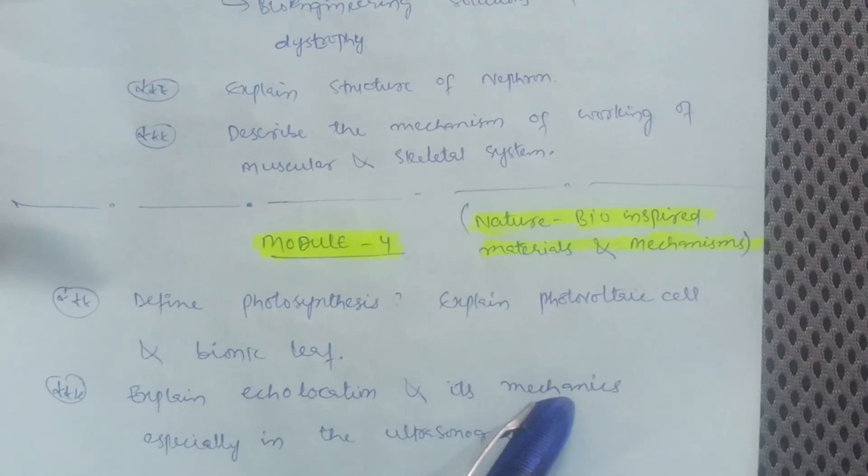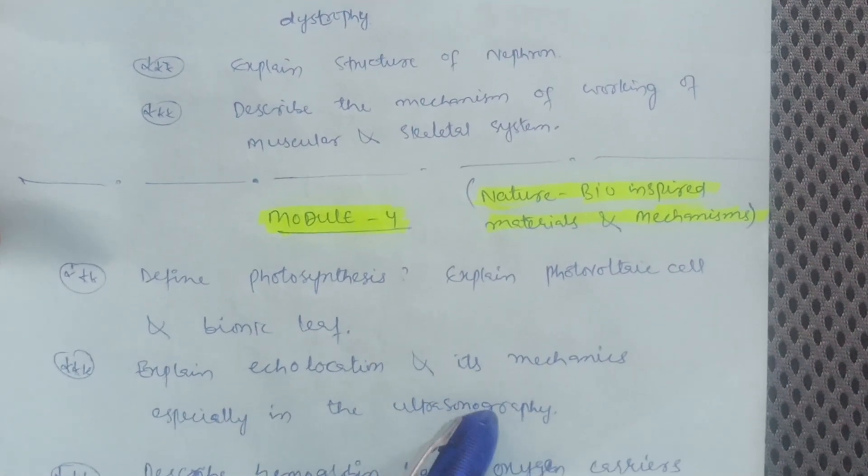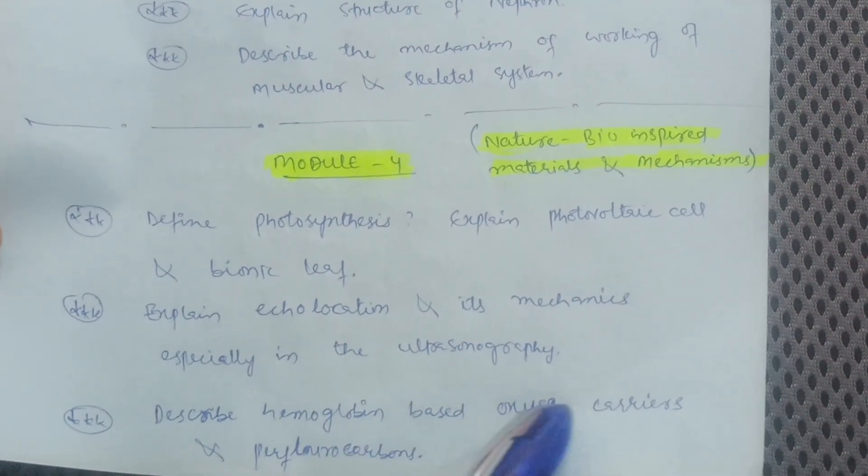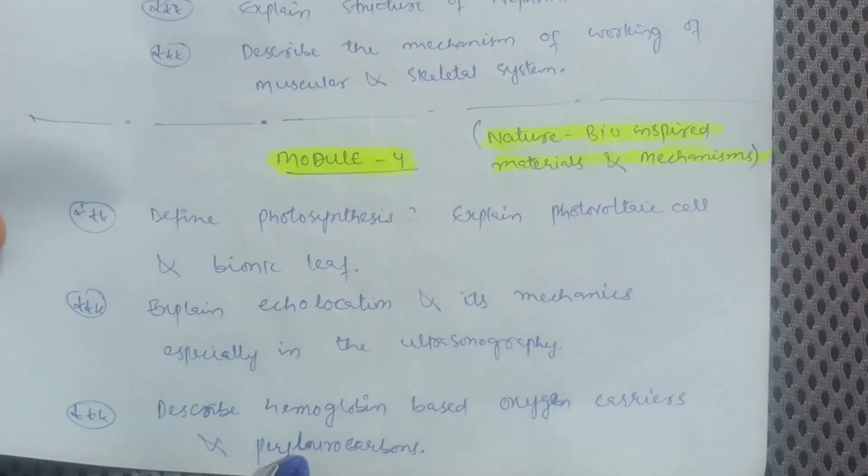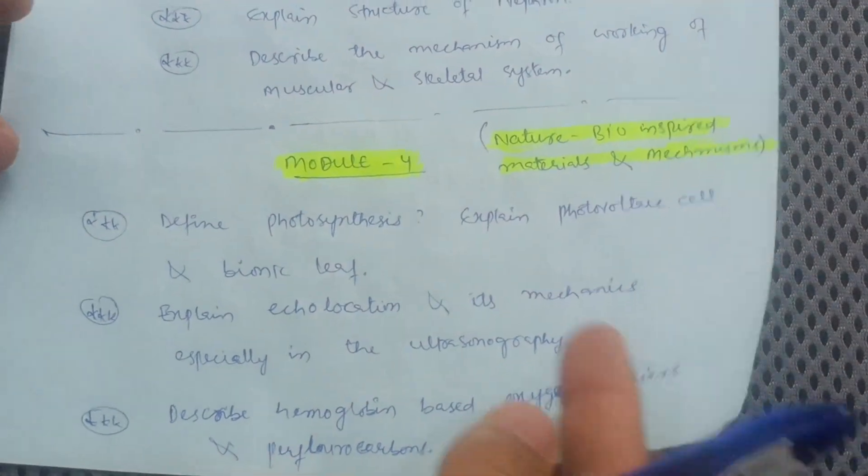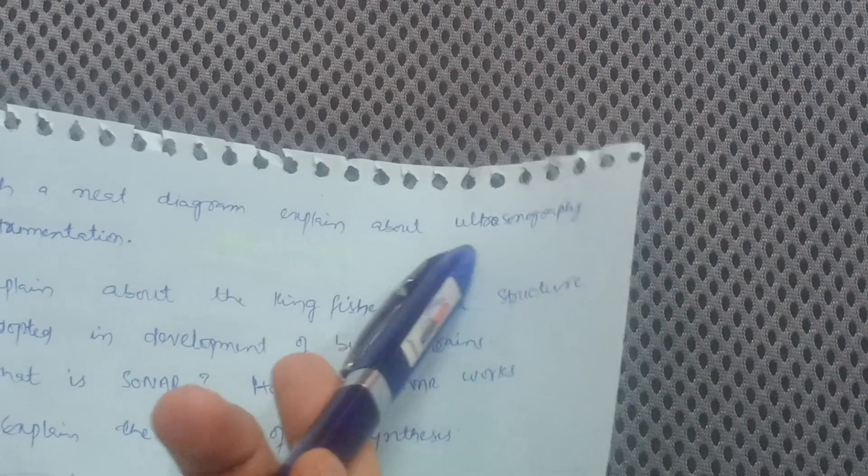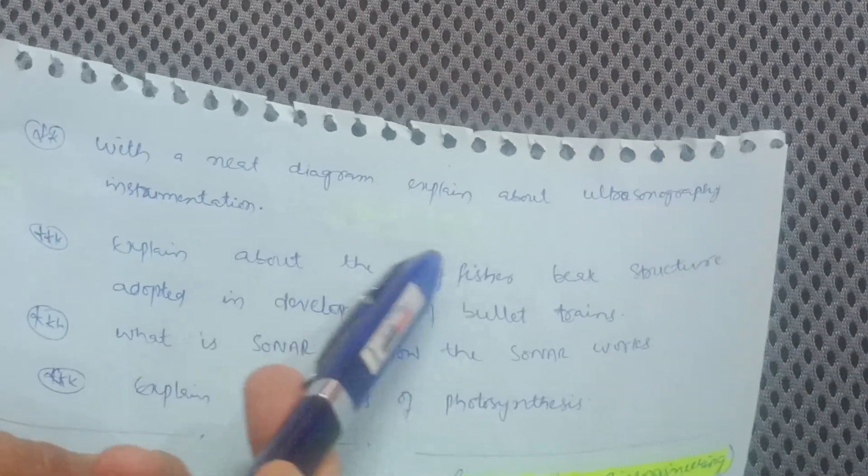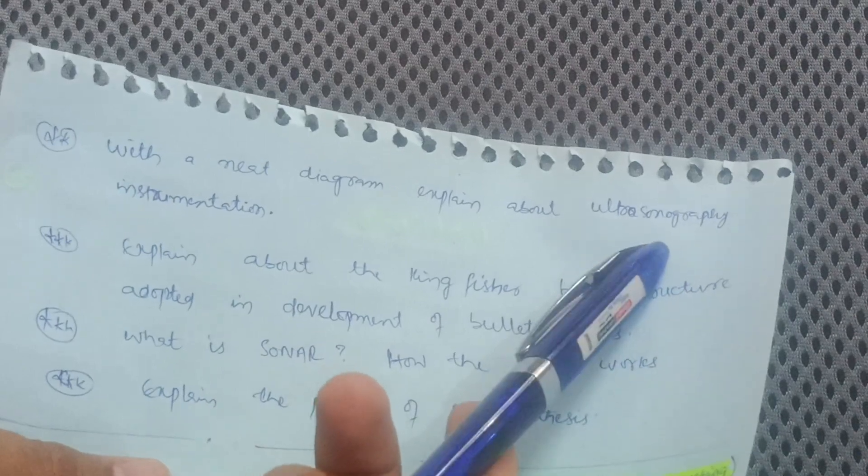The most important questions are like define photosynthesis, explain photovoltaic cells and bionic leaf, explain echolocation and its mechanics especially in ultrasonography. Most important one, describe hemoglobin based oxygen carriers and perfluorocarbons. These are the important questions. Then let's proceed with a neat diagram, explain about ultrasonography, most important question, and its instrumentation.